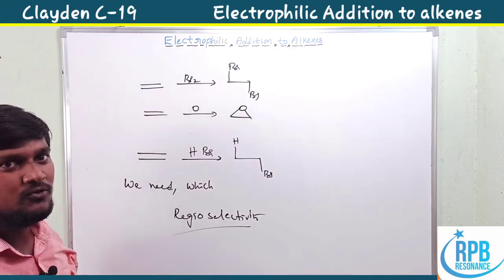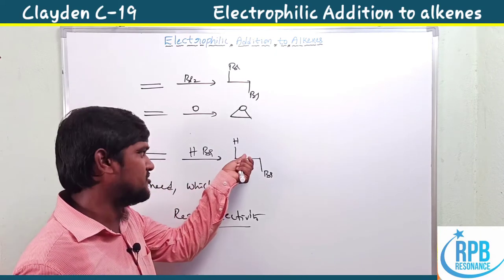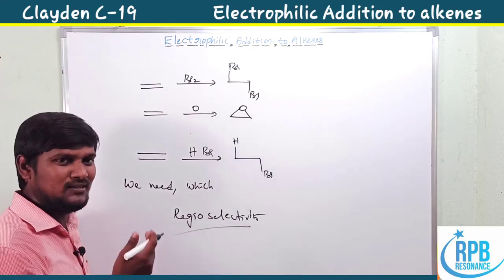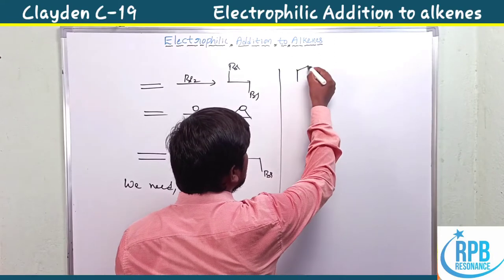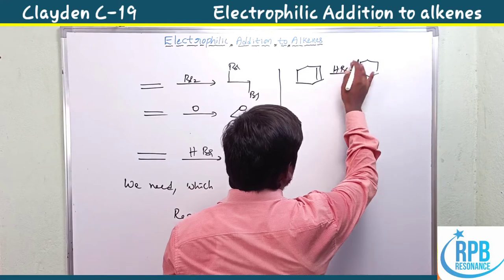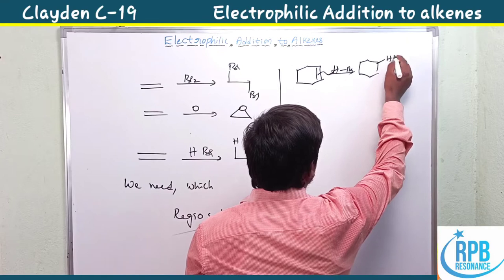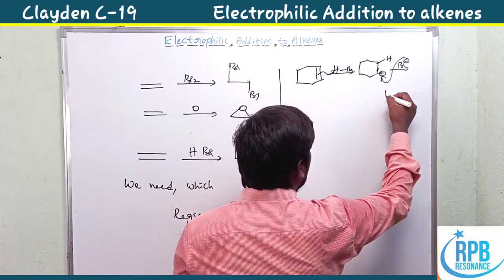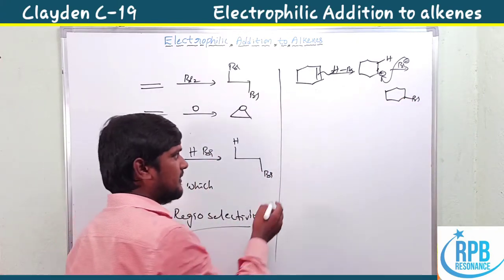Today we are going to deal with the regioselectivity of electrophilic addition to unsymmetrical alkenes. For a symmetrical alkene, whether H attacks the left or right side, we get the same product. In case of an unsymmetrical compound with HBr, one end is protonated, and then a carbocation is attacked by the nucleophile to form the product.